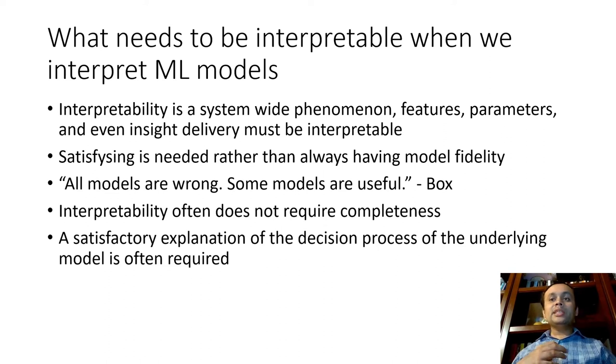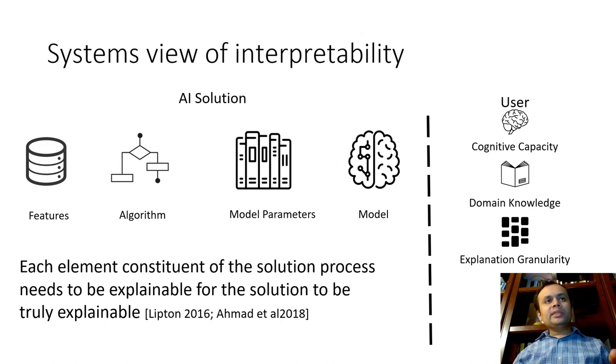So, the way to think about it is to take a satisficing approach. Where the idea is that the model should be good enough for the task at hand, while also having some sort of model fidelity. And to quote the famous statistician Box, all models are wrong, some models are useful. That said, the explanation may or may not require completeness, which is okay given certain circumstances, given certain constraints.